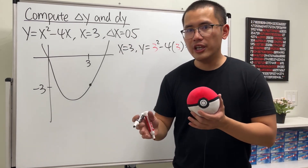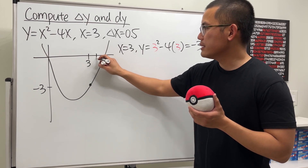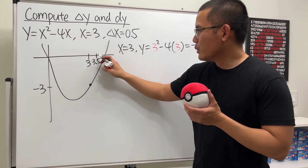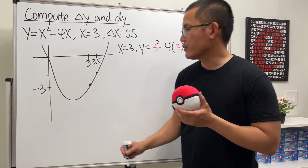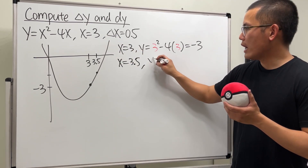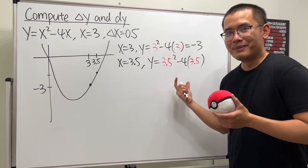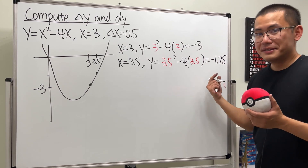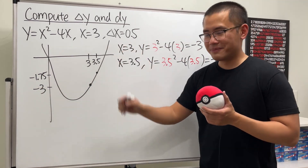Δx means the change in x, which is positive 0.5. So we go from x = 3 to the right 0.5 units, giving us x = 3.5. Note that at x = 4, y = 4² - 4(4) = 0. At x = 3.5, we plug in: y = 3.5² - 4(3.5), which gives us -1.75. This is still an exact answer, though harder to compute.